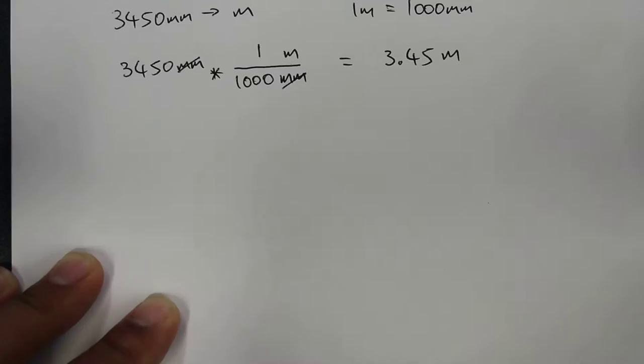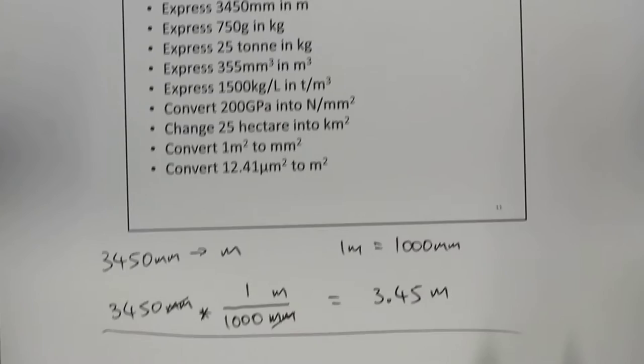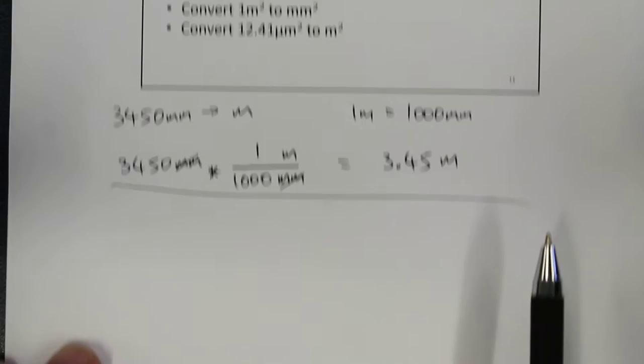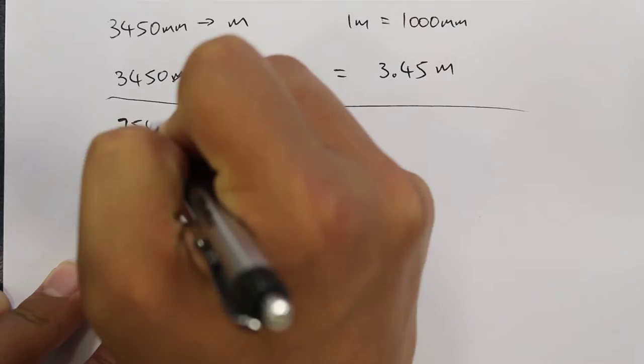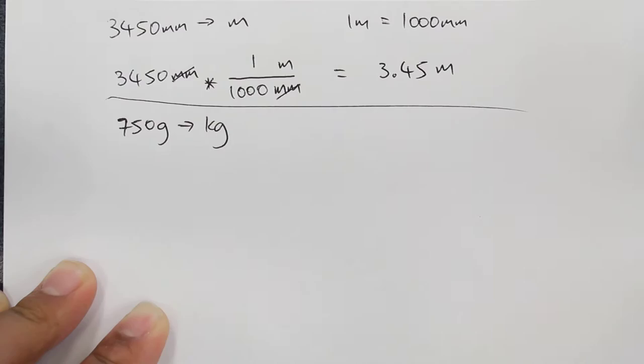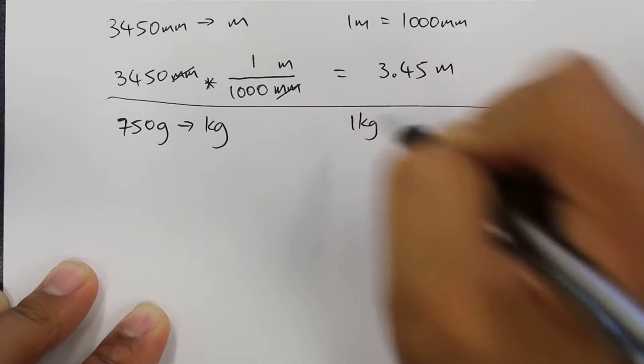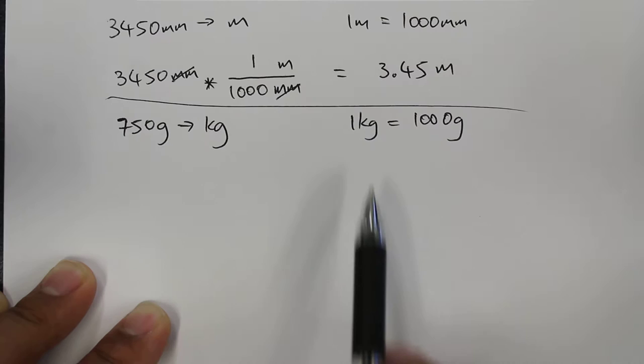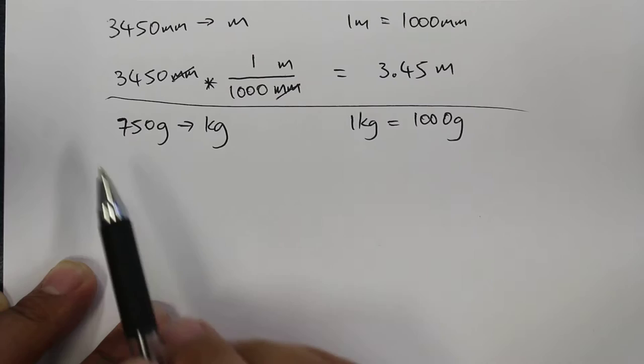So that solves the first question. For the second question, we have express 750 grams in kg. So 750 grams, we want to represent this in kg. So one thing we need to know here is that in 1 kilogram, there is 1000 grams. Or you could say that the kilo prefix means times 1000.